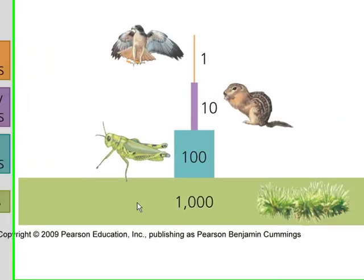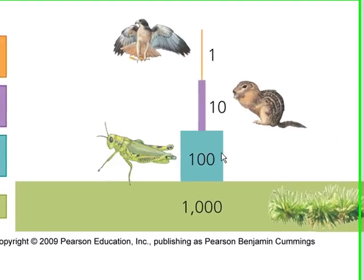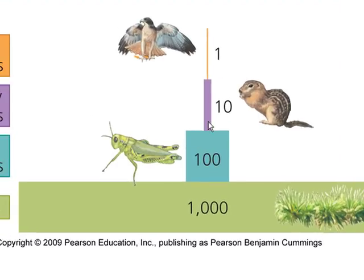A rule of thumb is that about one-tenth, or ten percent, of the energy is transferred to the next trophic level from the level below it. So, one-tenth of the energy from the producers is passed on to the primary consumers, and one-tenth of that energy is passed on to secondary consumers, and so on. This creates a pyramid shape.